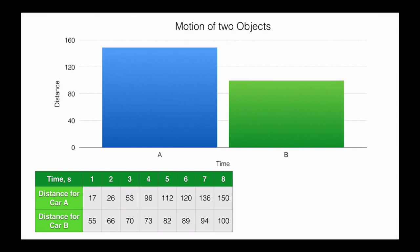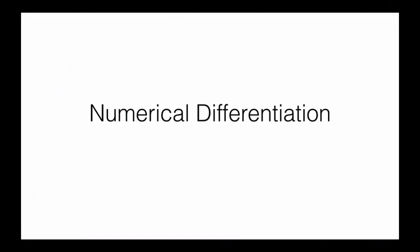There is no equation, there is no anything. We just have the data, points, and the time and the distance. So is it possible to get the speed? And how do we know which one is moving faster? And how fast is it? So that's why this is the reason why we need numerical differentiation.